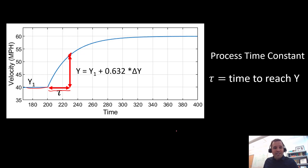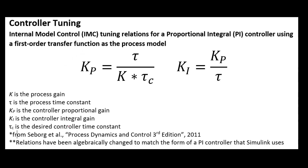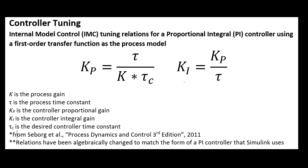The next step is to tune the controller. We need to find kp (the proportional controller gain) and ki (the integral controller gain). These are determined using tuning rules called internal model control (IMC) tuning relationships, which make this process much more systematic rather than arbitrary.